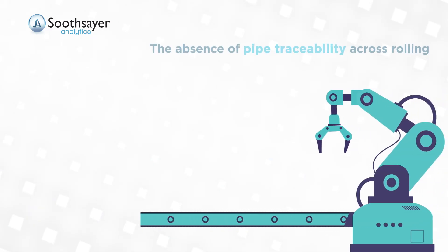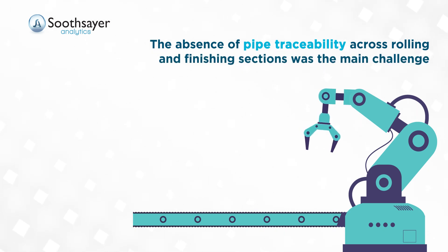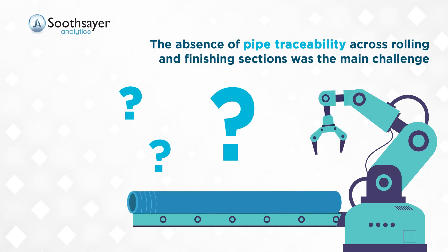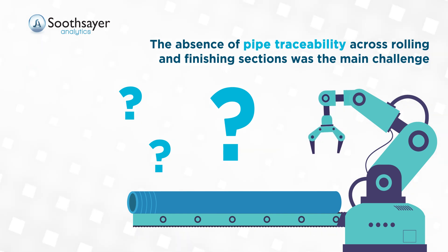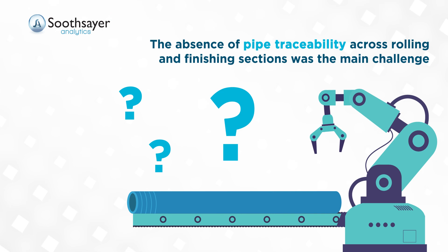The process involves discrete manufacturing. The main challenge was the absence of pipe traceability across rolling and finishing sections, which inhibited connecting pre-straightener readings with post-processing readings.